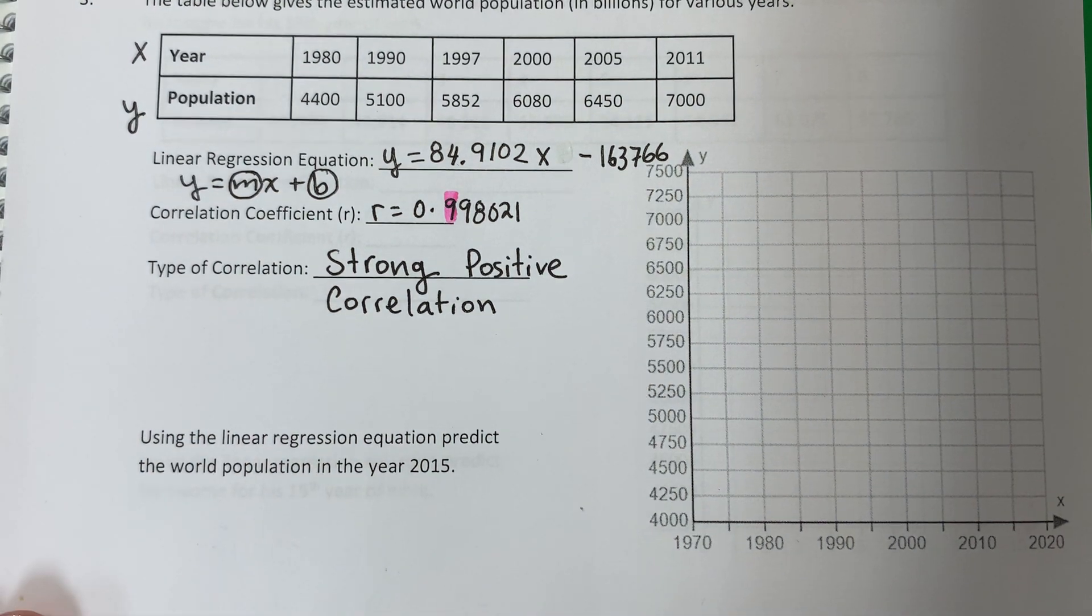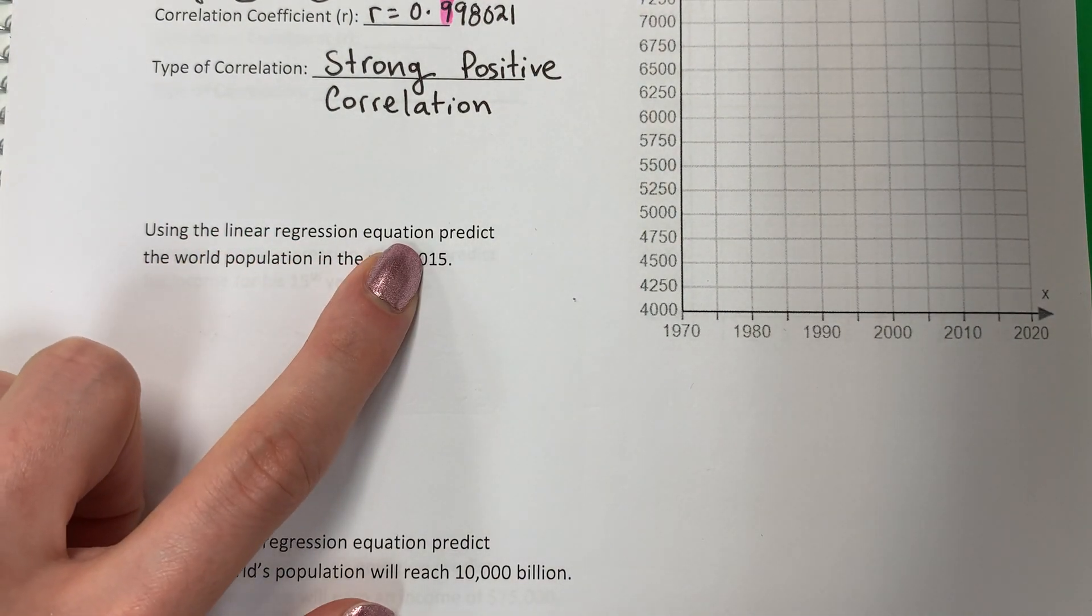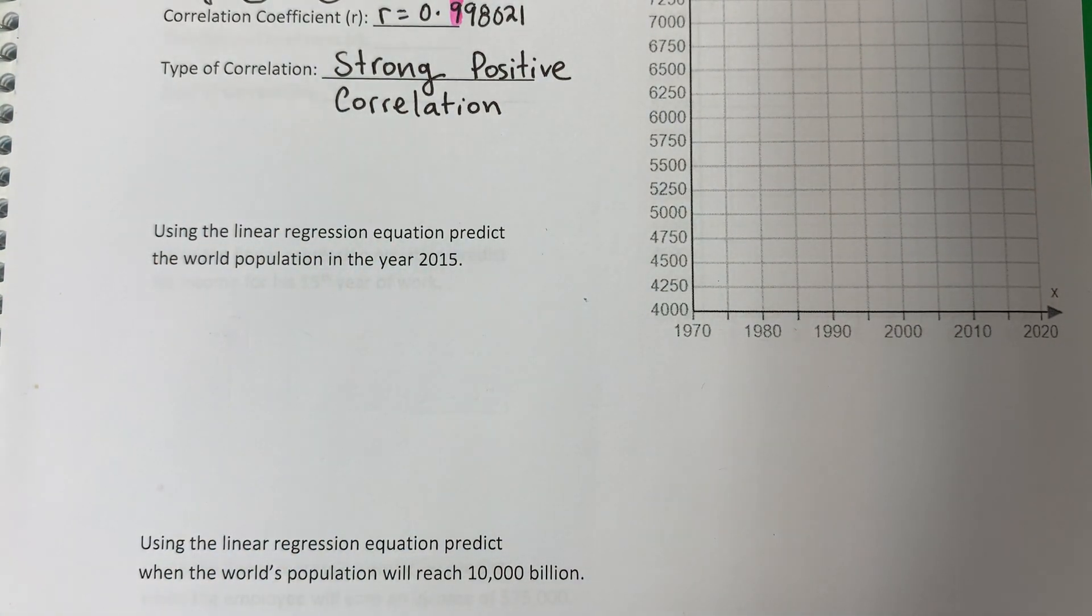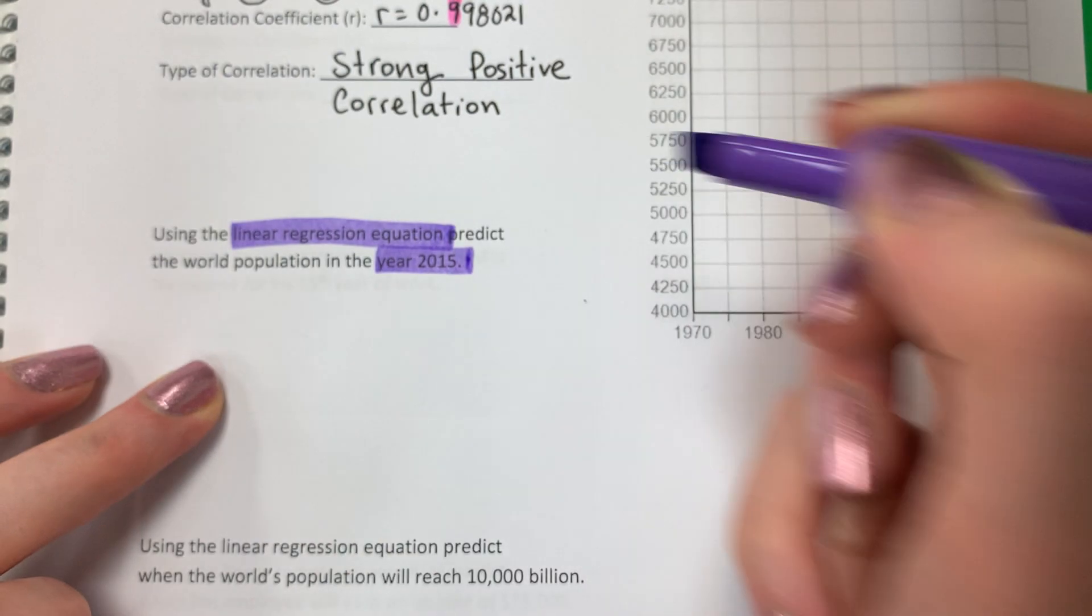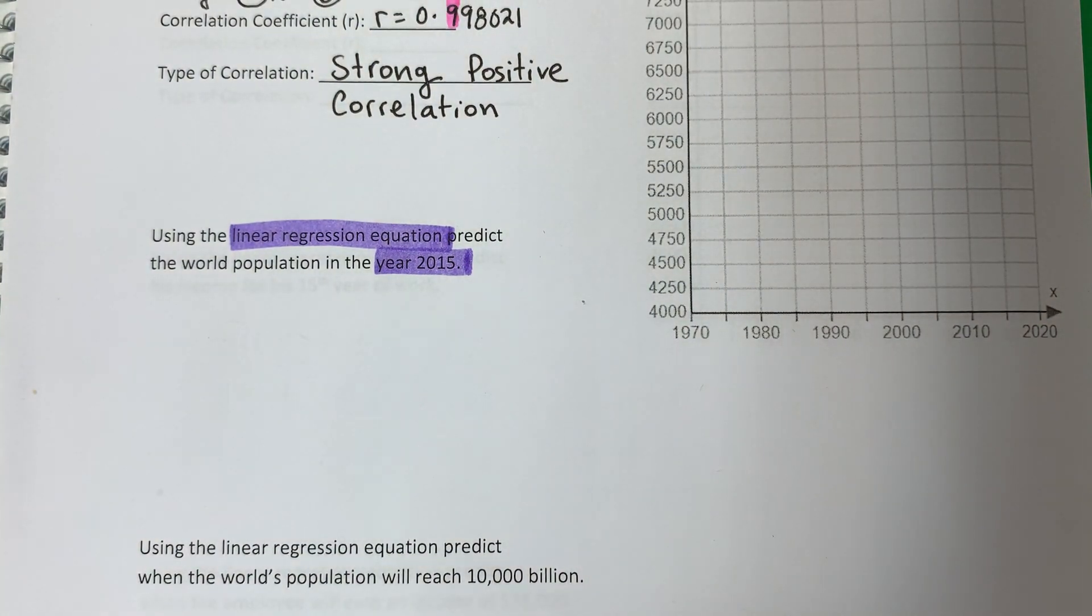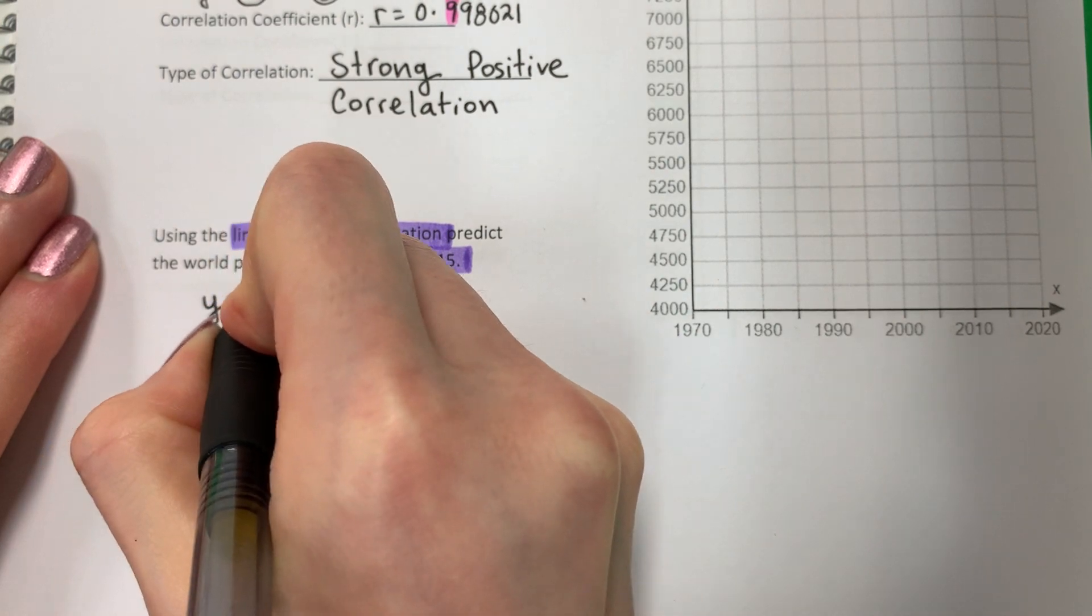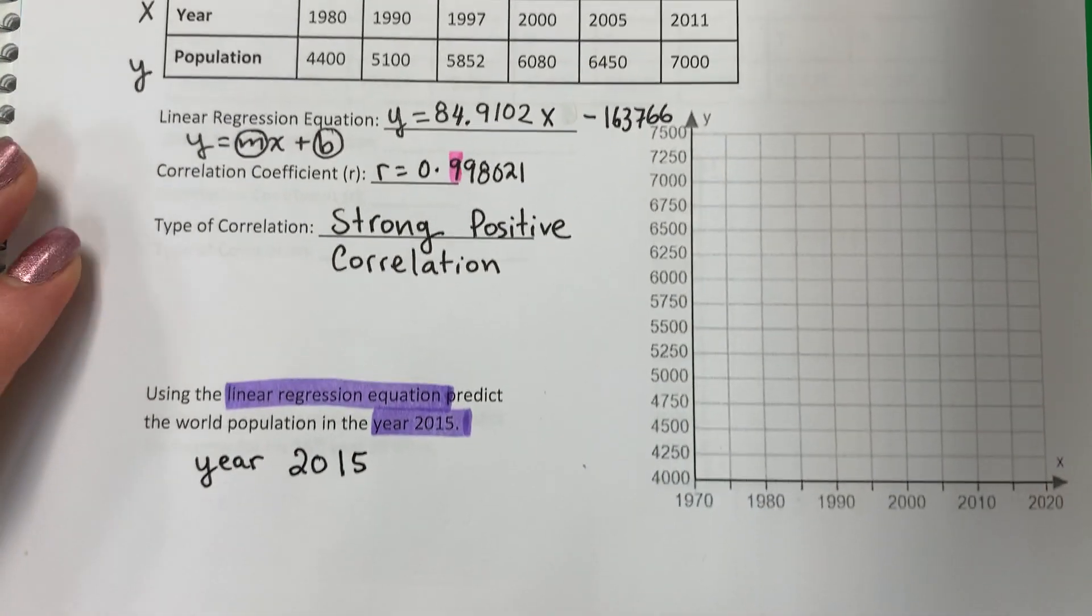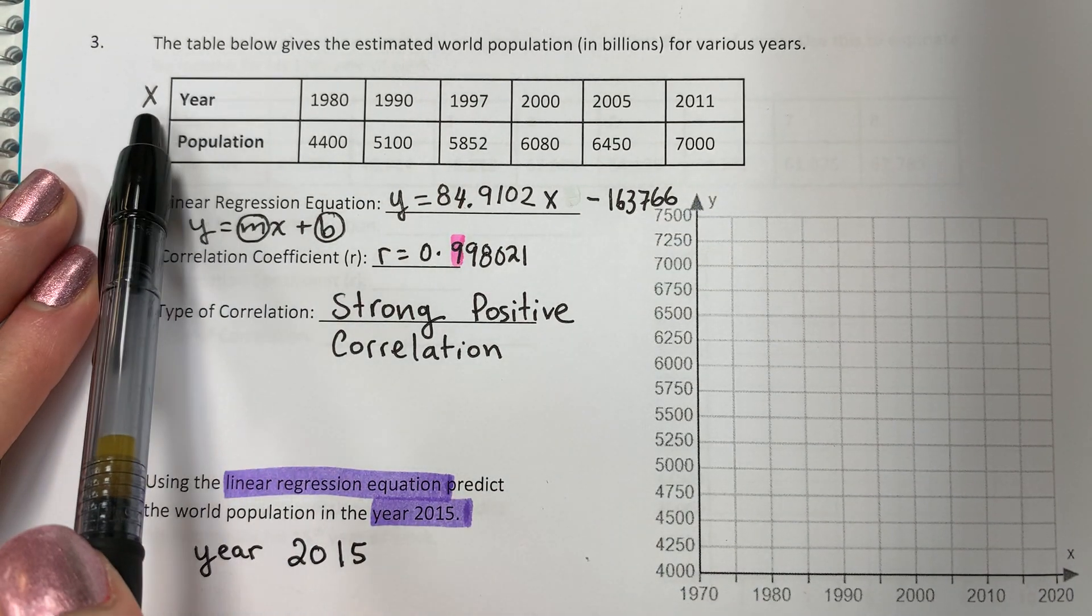Let's go ahead and make our predictions now. Using the linear regression equation. Predict the world population in the year 2015. So I need to use my equation. Necesito usar mi ecuación. And I have a number. Tengo un número. Year. Ano. 2015. So I have the year. 2015. What letter is year? ¿Cuál letra es año? X or Y? X o Y. Year is X.